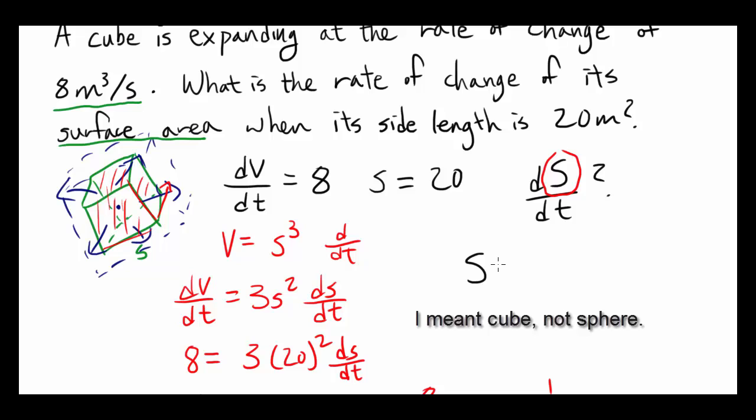Well, we know the surface area of the cube is 6 times the side length squared. Because one side length squared is going to give you the area of one face, and since you have 6 faces on a cube, the surface area is going to be 6S squared.